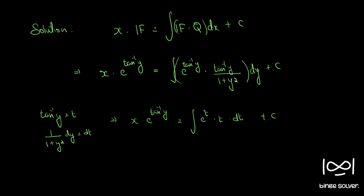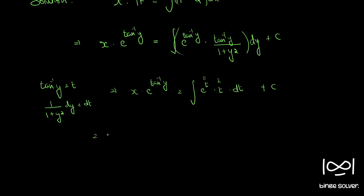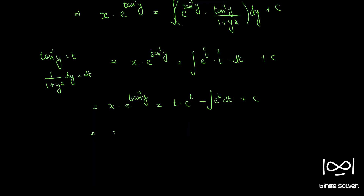We solve this by integration by parts, where t is the first function and e^t is the second function. So x·e^(tan⁻¹y) = t·e^t minus the integral of 1·e^t dt + c, which gives t·e^t minus e^t + c. Substituting back t = tan⁻¹y, we get x·e^(tan⁻¹y) = tan⁻¹y · e^(tan⁻¹y) minus e^(tan⁻¹y) + c.